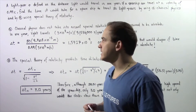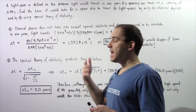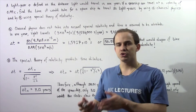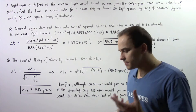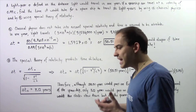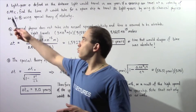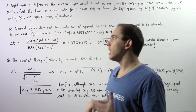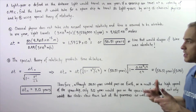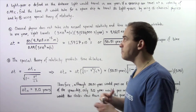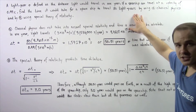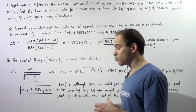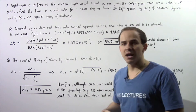Let's examine an example dealing with the special theory of relativity and time dilation. A light year is defined as the distance that light travels in a single year. We have a hypothetical spaceship that can travel at 99% of the speed of light in a vacuum — 0.99c. We want to find the time it would take to travel 50 light years using (A) classical physics and (B) the special theory of relativity, which implies time dilation.